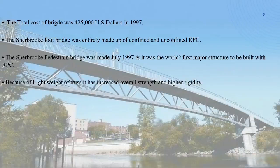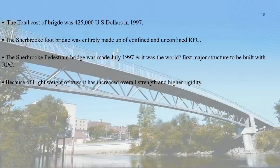The total cost of the bridge was 425,000 US dollars in 1997. The Sherbrooke footbridge was entirely made up of confined and unconfined RPC. It was the world's first major structure to be built with RPC. Because of the light weight of the truss, it has increased overall strength and higher rigidity.